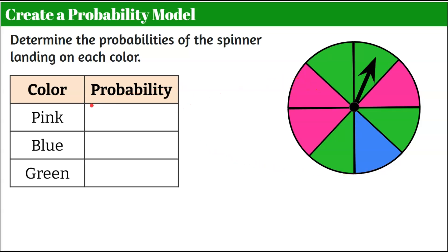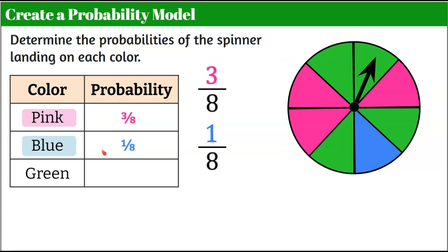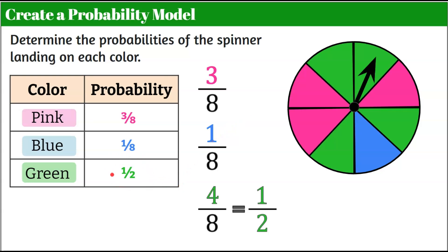So now we're going to determine, in theory, if we spin, we have three out of eight opportunities to land on pink. So the probability of spinning and landing on pink is three out of eight. For blue, out of our eight sections, only one is blue, so the probability of spinning blue is one out of eight — a one-eighth chance. For green, four of the eight sections are green, and we know that four-eighths simplifies to one-half. So we have a one-half probability of getting green — a larger probability than pink, and the least likely outcome is blue.